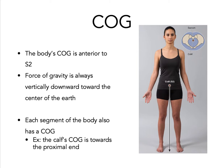The force of gravity is always vertically downward towards the center of Earth, as demonstrated in this image. Each segment of the body also has its own center of gravity. The calves will have their center of gravity closer to the proximal end, a thigh will have its own center of gravity, and the head, arm, and trunk as one unit will also have a center of gravity.